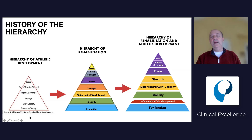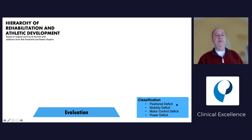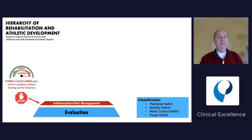As we go through it, we have the evaluation part on the right side, and we talk about its classification. We talk about what's called a positional deficit, mobility deficit, motor control deficit, or a power deficit - that's the important part. The next part we go to is our inflammatory or pain management. As we go up the pyramid, if you find that your patient is pain dominant, a lot of inflammation, high-level irritation, we go to this area where we try to calm down the patient's symptoms.